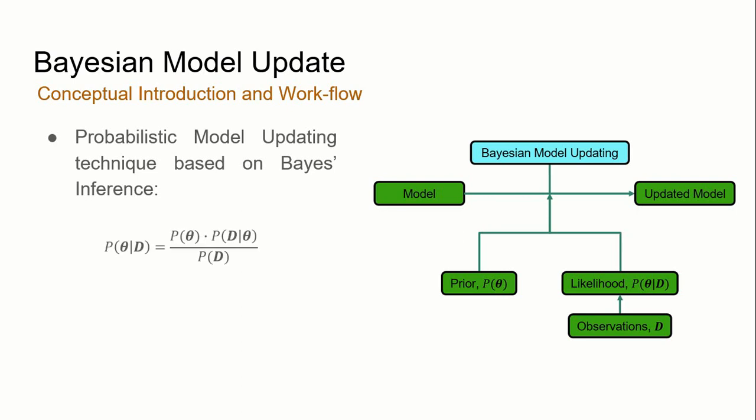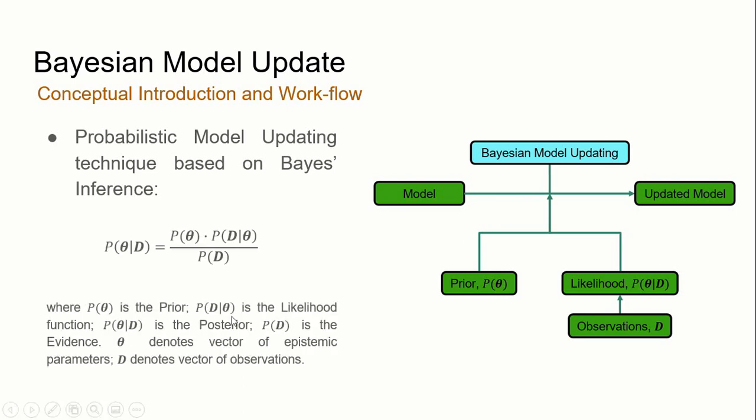And Bayes' inference is mathematically described by this equation, whereby we have the prior, which represents the a priori knowledge of the input parameter, which describes essentially what do we know about the input parameter before we observe any measurements. And this expression over here is the likelihood function, which describes the degree of agreement between the model and the experimental data that we obtain.